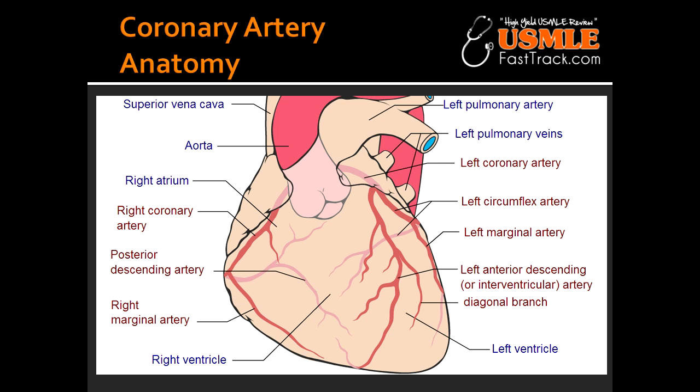What artery supplies the SA and AV nodes? The SA and AV nodes are usually supplied by the RCA, the right coronary artery. What does it mean when the heart is said to have a right dominant circulation? Right dominant circulation occurs in about 85% of patients, in which the posterior descending artery arises from the right coronary artery.